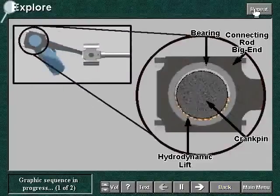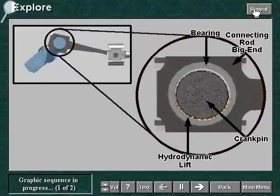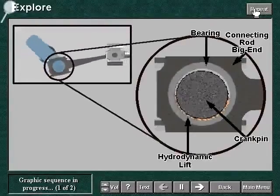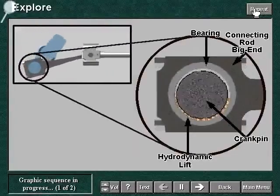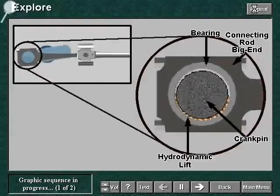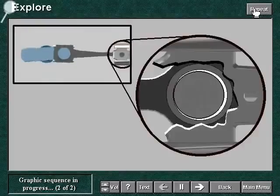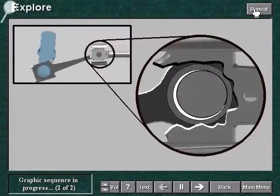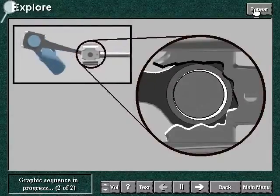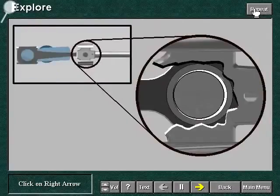In main and big end bearings, the pin always makes a complete revolution. This allows hydrodynamic lift to take place. In small end bearings, however, the crosshead pin only makes oscillations. The lack of complete rotation makes the conditions less favorable for hydrodynamic lift.